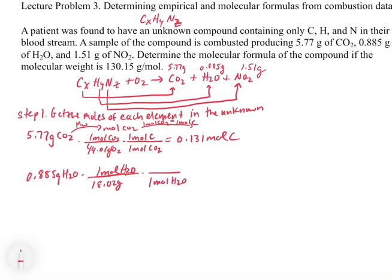And now in this case, for every one mole of H2O, because there's a ratio of two hydrogens for every one H2O molecule, we have two moles of H. So this is going to give us 0.098 moles of the hydrogen.